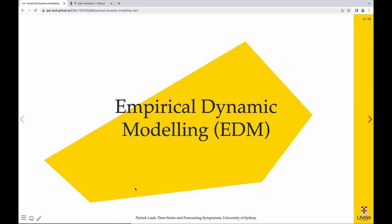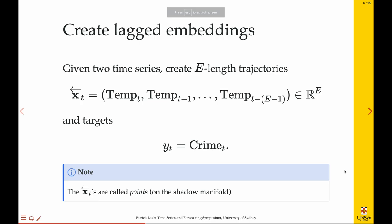Creating lagged embeddings. So the example I'm using for this talk is this crime and temperature one. Take one of them, say we've got temperature here, and I'm creating these little, that the EDM people call them points on the manifold, but I kind of think of them as like short little mini trajectories in the time series. And so the temperature at some time, and the previous time, and a few times back, capital E number of them. And I'll throw that into a vector x, and the target that's associated with that is the other time series, so crime at the same time t.